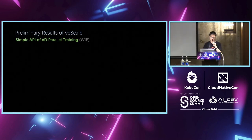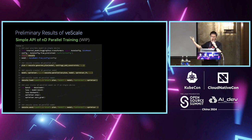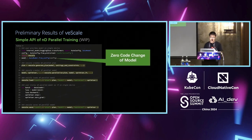Now I'll show some results. First, the APIs — still a work in progress, but this is the end goal of V-Scale. Users can grab a model from Hugging Face or write their own local file; those models can be directly executed on a single device without any code changes. V-Scale will provide a generate plan API to automatically generate a parallelization plan — currently under development and not yet available in open source.